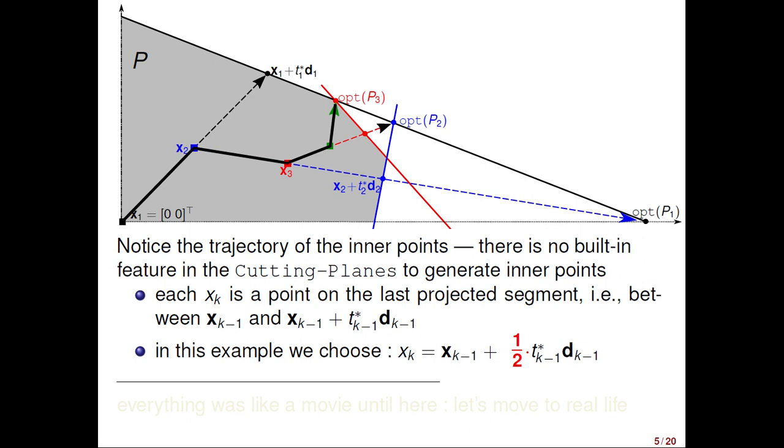Notice, please, that the trajectory of the inner points, the black curve, represents the trajectory of the inner points along the iteration. Okay? So, in this sense, the proposed method behaves a bit like an interior point algorithm. This is the strength of the new method, the existence of these inner solutions, because the outer solutions already exist in cutting planes.